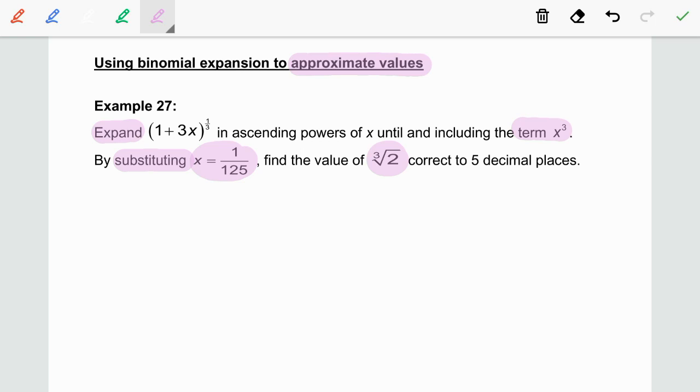As usual, we need to check the power number in order to choose the suitable binomial formula. Here, the power number is 1/3 which is a fraction. So, we are going to use this formula.